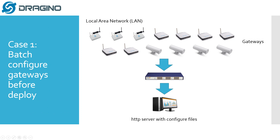Here is the use case for when you need this feature. For example, if you order several hundred thousand gateways from Jogeno and you want to batch configure the gateways before deployment, you can use this feature. The gateway will auto connect to an HTTP server, download the configuration files, and configure itself.